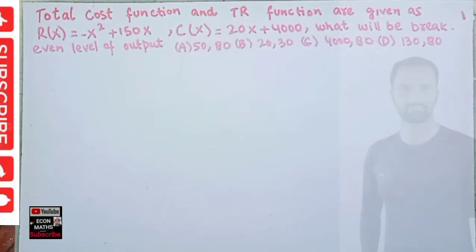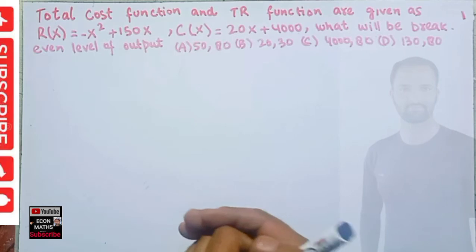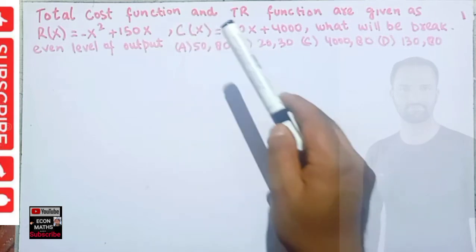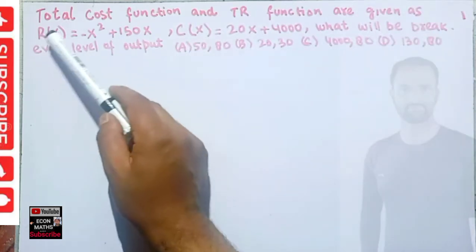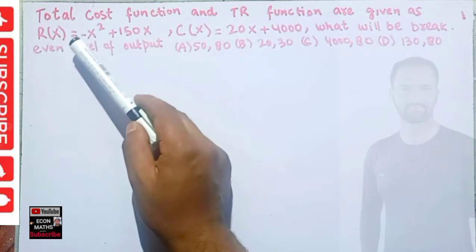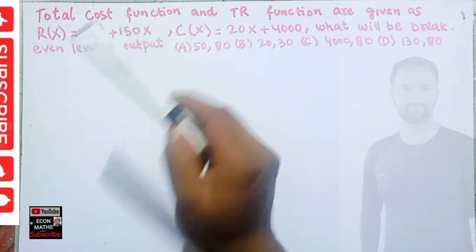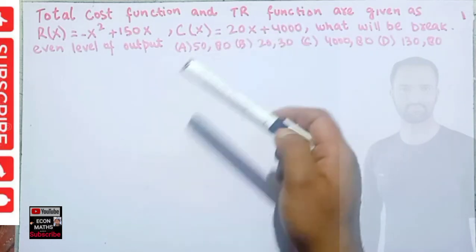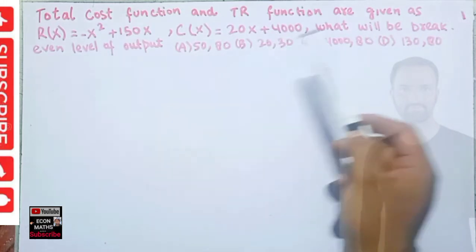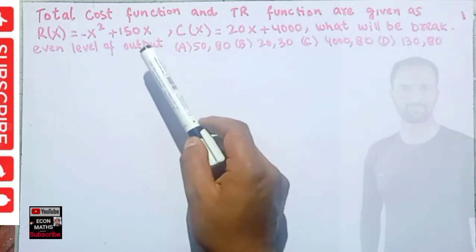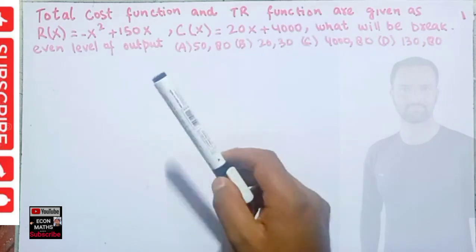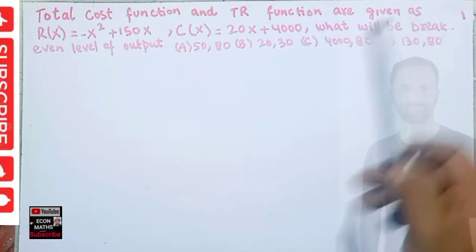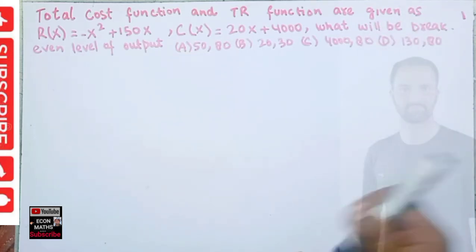In this video we will try to solve a problem on break-even point in the total revenue and total cost functions. The total revenue function is given as minus x squared plus 150x, where x is the quantity, and the total cost function is given as 20x plus 4000. We have to find the break-even level of output. The options are 50 and 80, 20 and 30, 40 and 80, or 130 and 80.